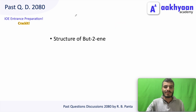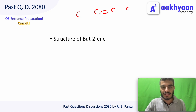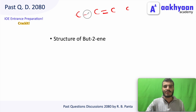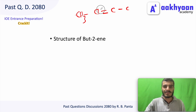The structure of but-2-ene: but-1 has 4 carbons, but-2-ene has the double bond at position 2. So we have C1, C2 (double bond), C3, and C4 in the carbon chain.